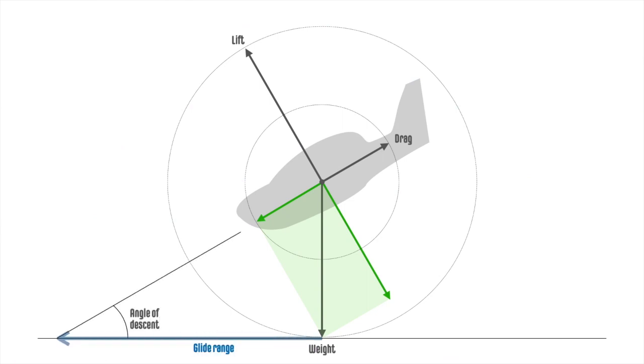In a steady glide descent, lift and drag counteract the weight force. Lift is reduced as the opposing weight component is also reduced.